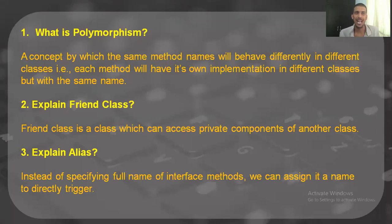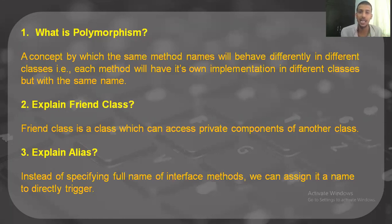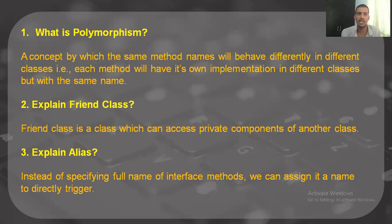What is an alias? An alias is basically another name — like a pet name. Instead of specifying the full name of an interface method, we can assign it a name to directly trigger the event. For example, Narendra Modi is called Namo — so Namo is an alias. Marshmallow is another example of an alias. Alias is basically understood as a nickname.